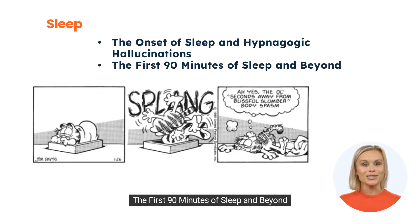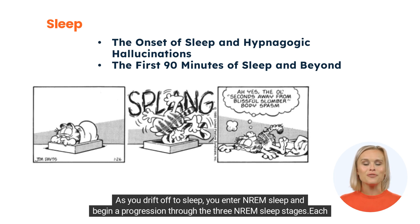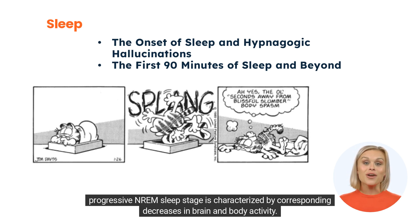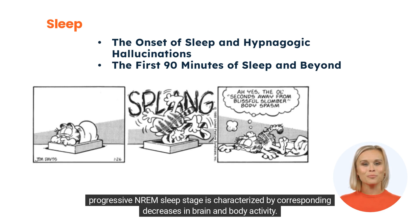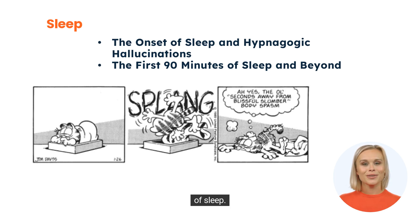The first 90 minutes of sleep and beyond: The course of a normal night's sleep follows a relatively consistent cyclical pattern. As you drift off to sleep, you enter NREM sleep and begin a progression through the three NREM sleep stages. Each progressive NREM sleep stage is characterized by corresponding decreases in brain and body activity. On average, the progression through the first three stages of NREM sleep occupies the first 50 to 70 minutes of sleep.